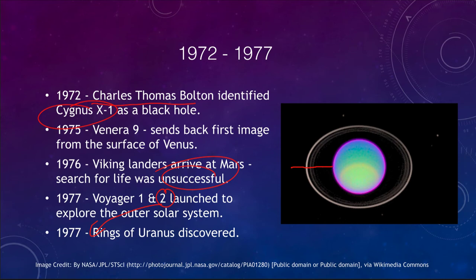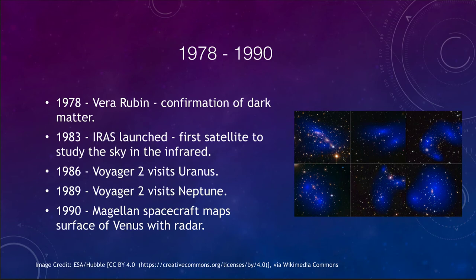Through the late 70s and into the 80s, we continued to make great strides. First was the confirmation of dark matter by Vera Rubin in 1978. Dark matter was found to be a very important component of the universe — the vast majority of matter is some kind of mysterious dark matter quite different from the ordinary matter we're used to.